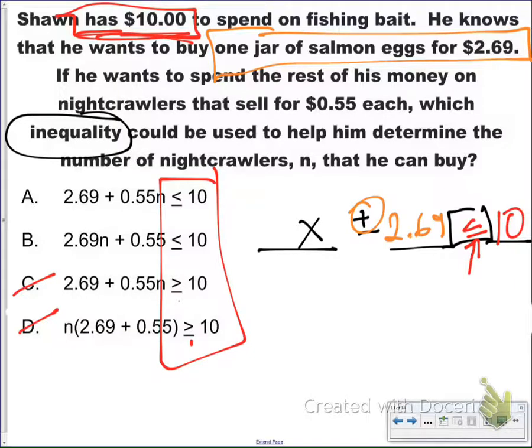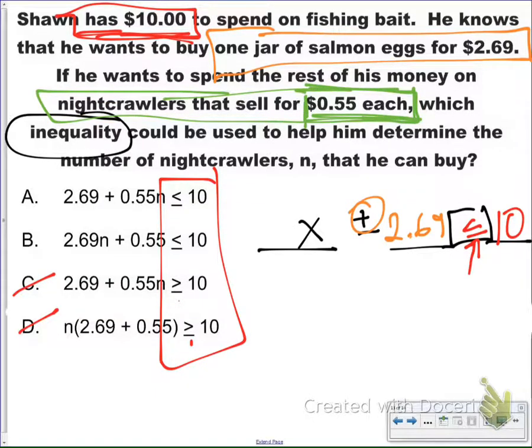Now, if I'm looking at my answer choices, I can already see which one it's going to be. But I want to finish this off. Last thing I'm looking for in my equation is what's being multiplied. What am I doing multiple times? Well, if I look at my nightcrawlers, they sell for $0.55 each. That means if I buy one, I pay $0.55. If I buy two, I pay $1.10. If I buy three, I pay $1.65. That means I am multiplying that one. Because I'm multiplying that, there's my number that goes with my X being multiplied.